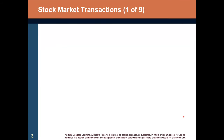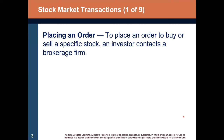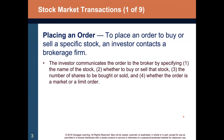Let's look at typical stock market transactions — specifically, placing an order. To place an order to buy or sell a specific stock, an investor contacts a brokerage firm. The investor communicates the order by specifying: one, the name of the stock; two, whether to buy or sell; three, the number of shares; and four, whether the order is a market or a limit order.